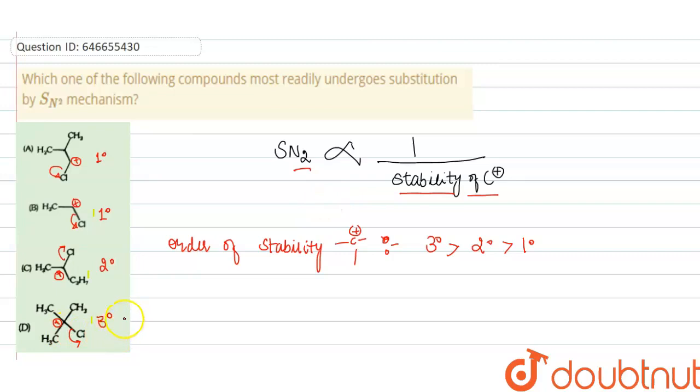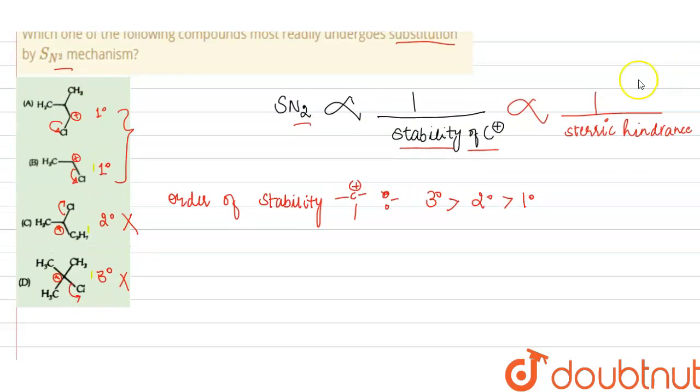So here this will not go into the SN2 mechanism because it is more stable carbocation. This will also not go. So here the comparison is between these two. Also we know that SN2 mechanism is inversely proportional to the steric hindrance. Steric hindrance is the bulky groups present around the carbocation. So more the steric hindrance groups, lesser will be the substitution SN2 reaction.